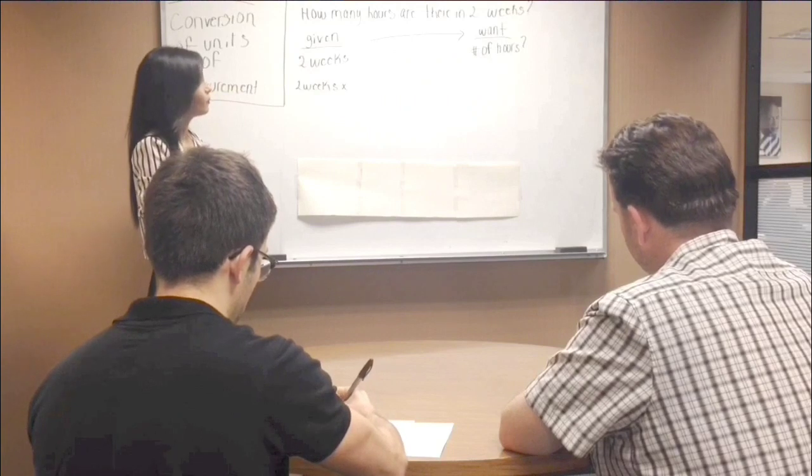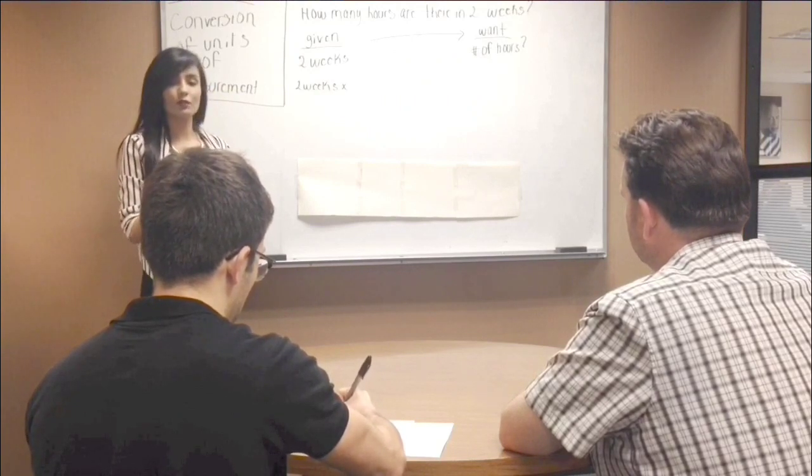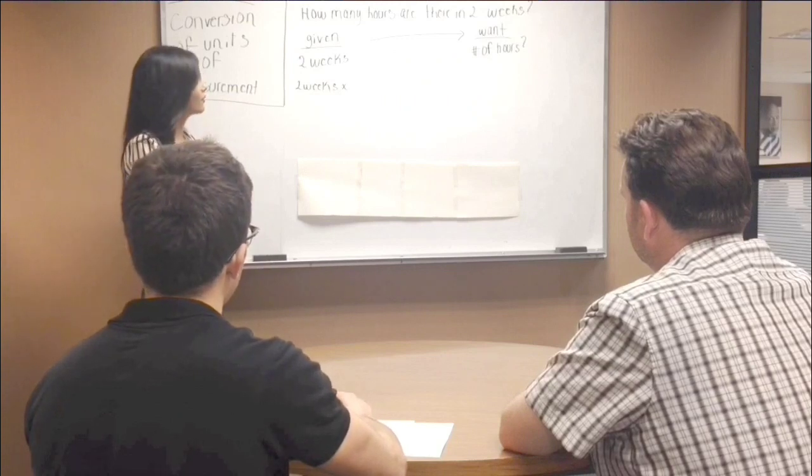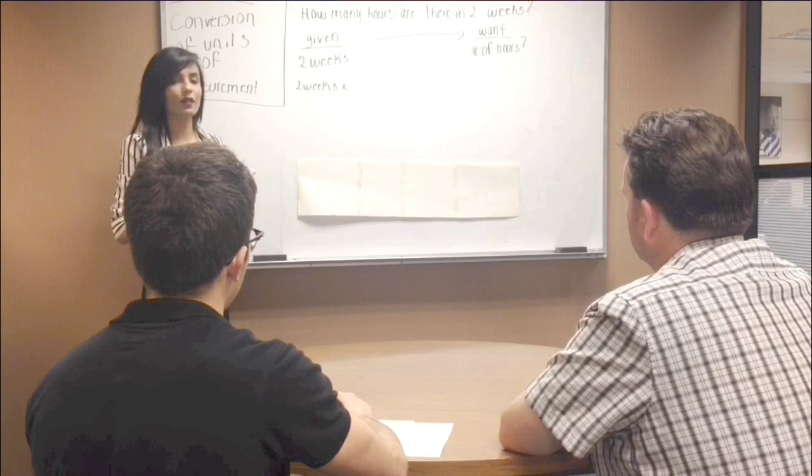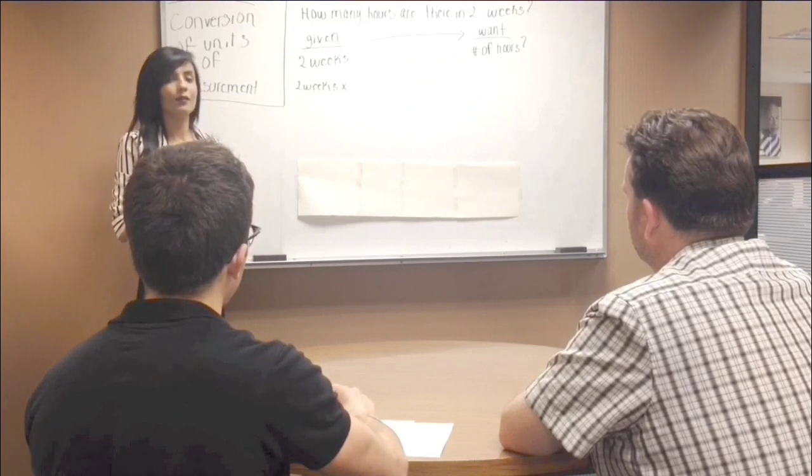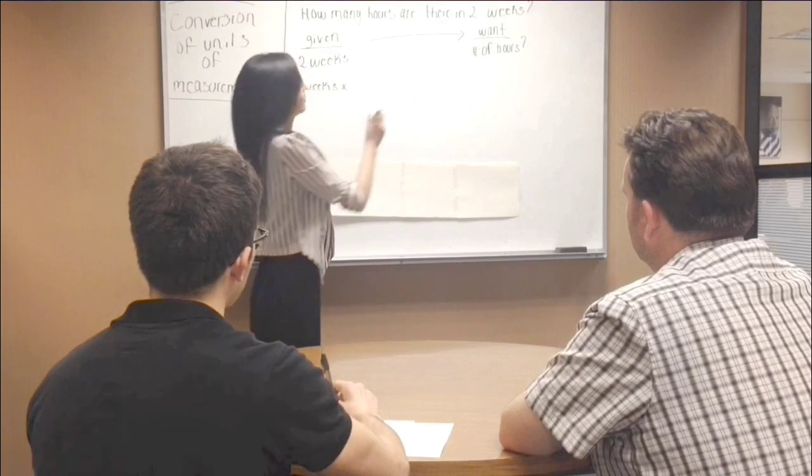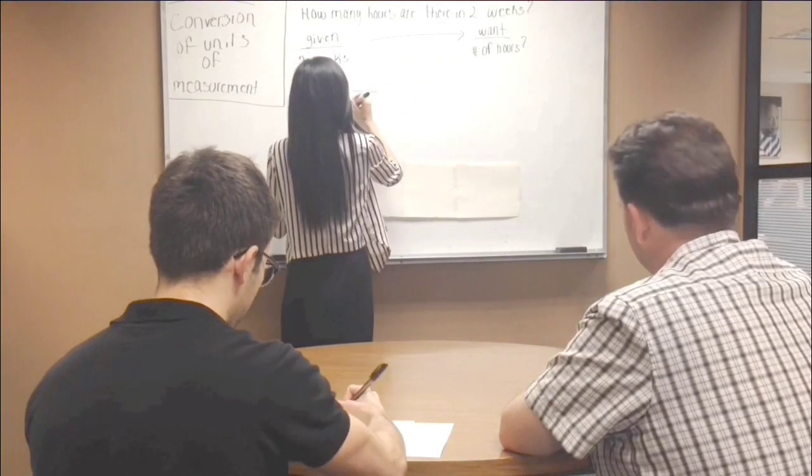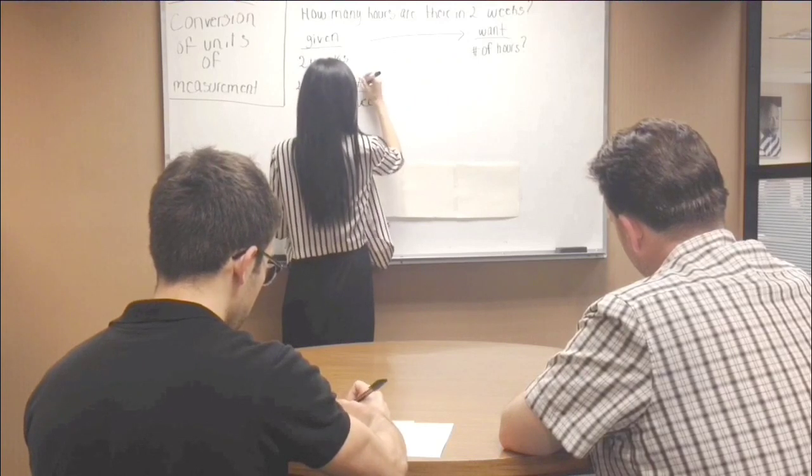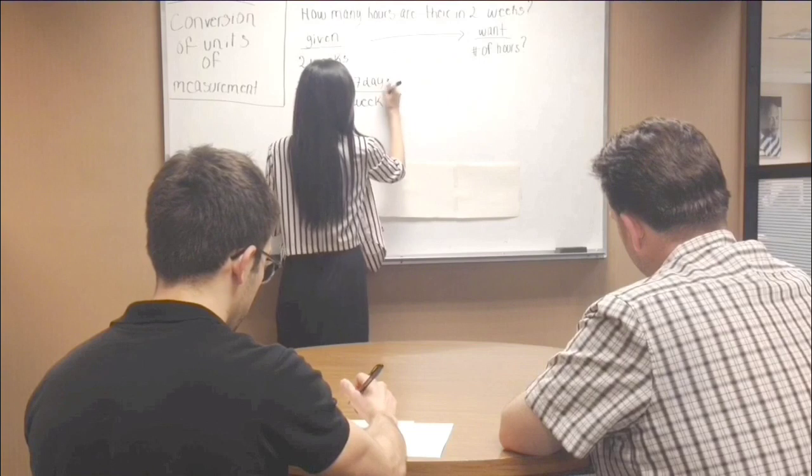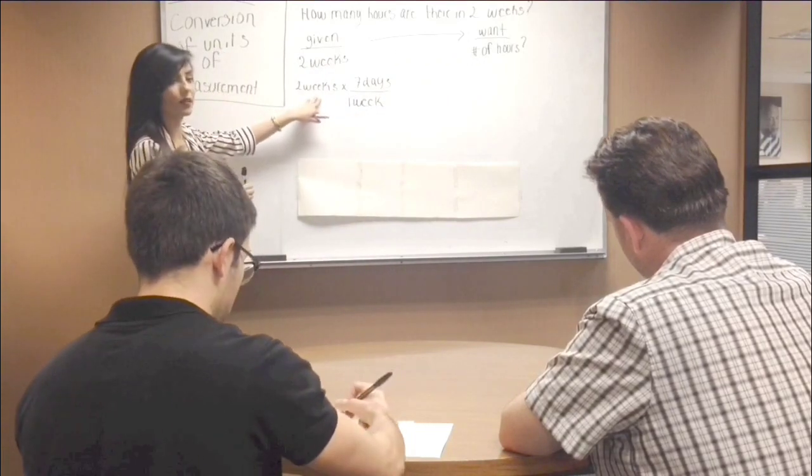For starters, we know that we're given weeks, which means that units of weeks need to cancel. So whatever conversion we use next must then also have units of weeks. Does anybody know a conversion that we can use that involves weeks? Weeks to days. Weeks to days. How many days are there in one week? There's seven days in a week. Note that I placed weeks in the bottom because I want units of weeks to cancel at the top.